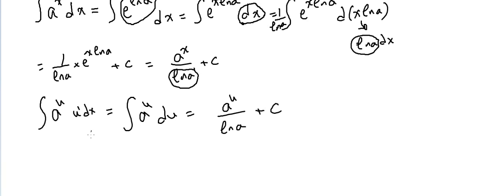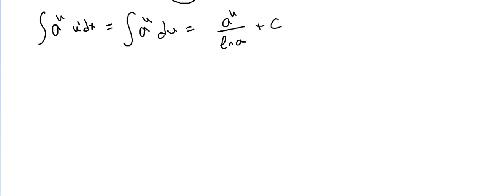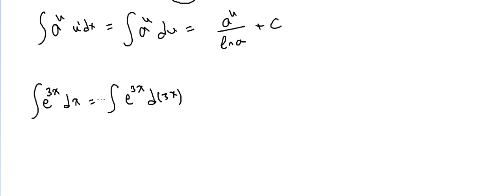Now let me give you an example. For the integral of e^(3x) dx, we write it as the integral of e^(3x) d(3x), and the derivative of 3x is 3, so we divide by 3. The answer is 1/3 · e^u du, which gives 1/3 · e^(3x) plus c.